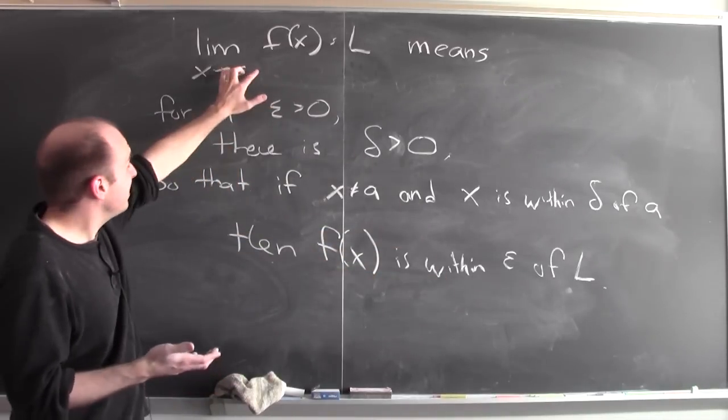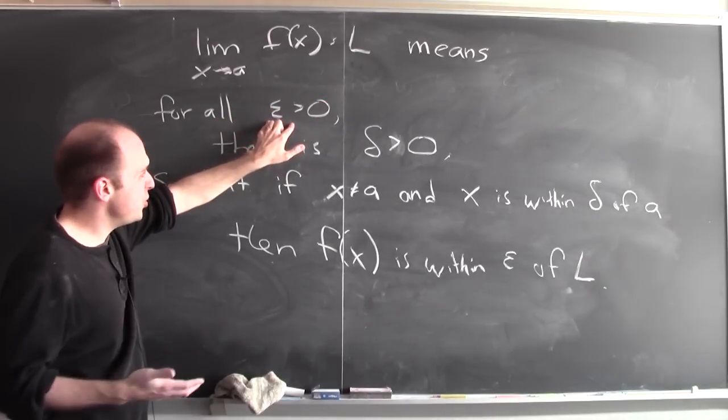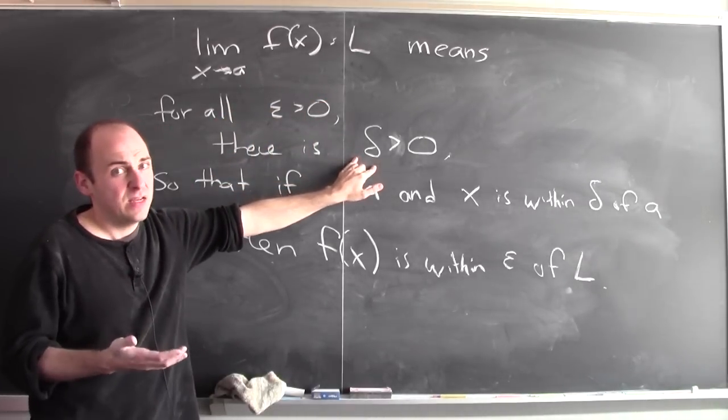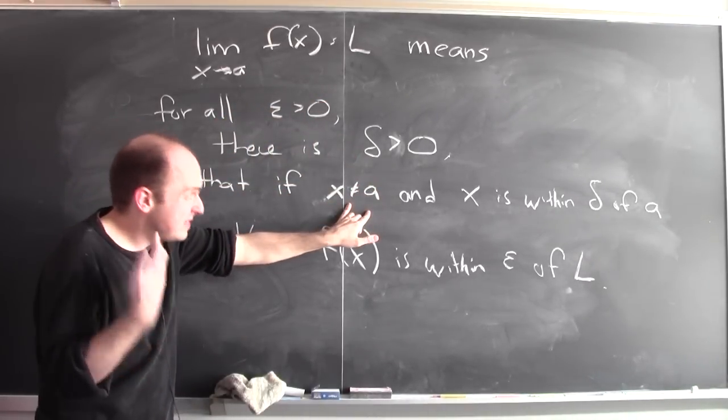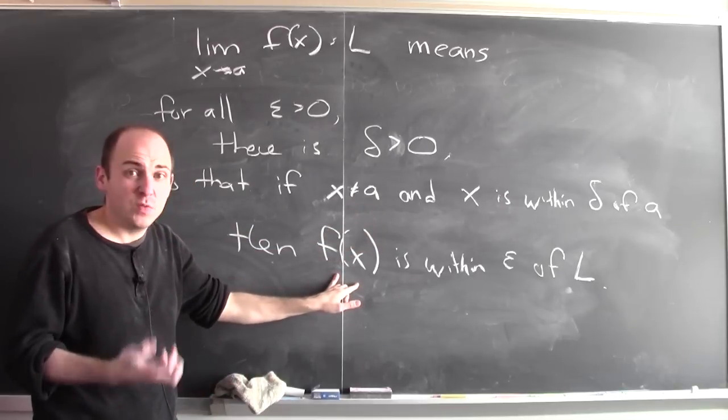And to say that the limit of f of x equals L means that no matter which epsilon I choose, there's some corresponding delta so that whenever x is within delta of a, then f of x is within epsilon of L.